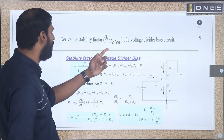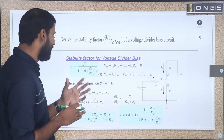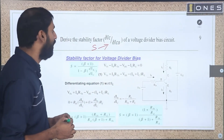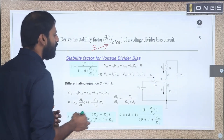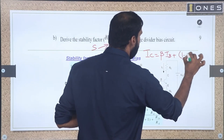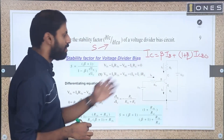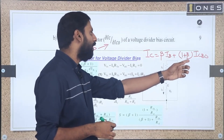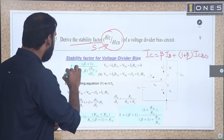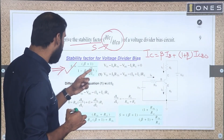Part B question: Derive the stability factor dIc/dIco for a voltage divider bias circuit. The stability factor S is defined as dIc by dIco. The standard expression is: Ic equals beta times Ib plus (1 plus beta) times Ico. This expression is differentiated with respect to Ico to give the stability factor: S equals (beta plus 1) divided by (1 minus beta times dIb/dIc).